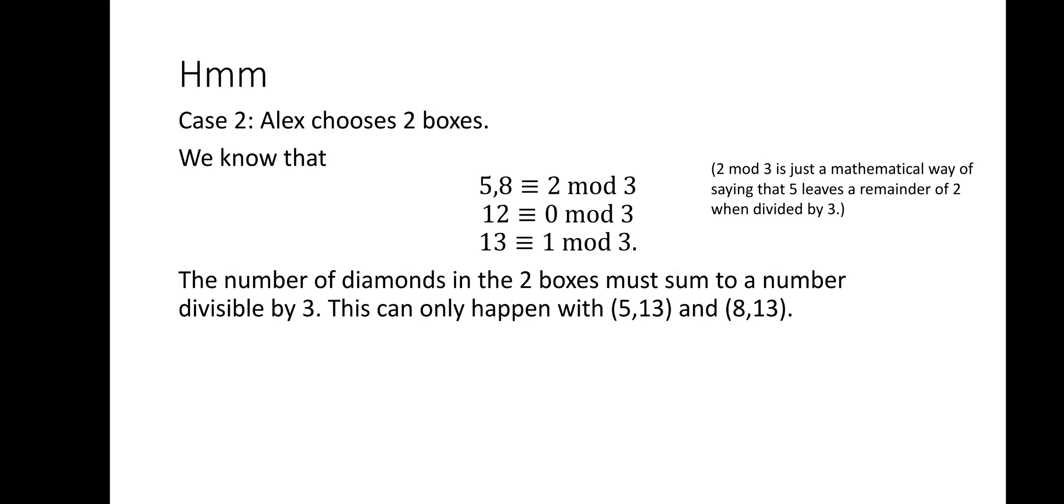The number of diamonds in the 2 boxes must sum to a number divisible by 3. This can only happen with 5, 13 and 8, 13, which sum up to 18 and 21. So there are 4 choose 2 combinations total, so the probability for this case is 2 over 6 or 1/3.